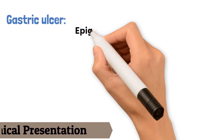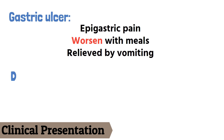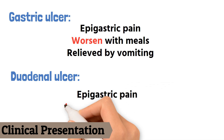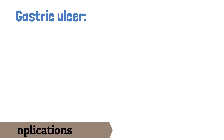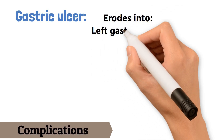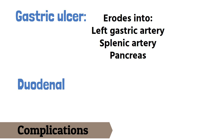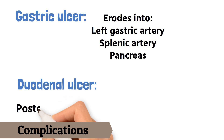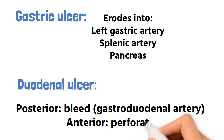Patients with gastric ulcers present with epigastric pain worsened with meals and relieved by vomiting, whereas in duodenal ulcers the epigastric pain improves with meals and can radiate to the back, which is why patients with duodenal ulcers tend to gain weight. Gastric ulcers can erode into the left gastric artery, splenic artery, or pancreas, resulting in torrential bleeding. Duodenal ulcers in the posterior wall can cause bleeding from the gastroduodenal artery, while anterior wall duodenal ulcers can perforate.